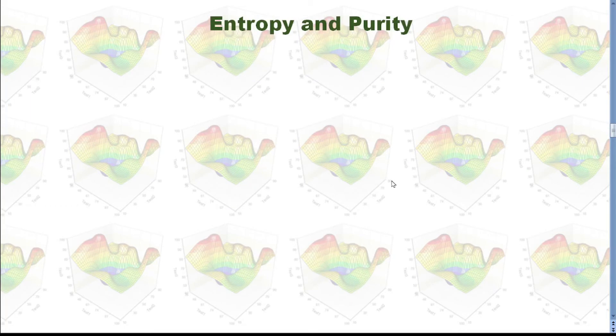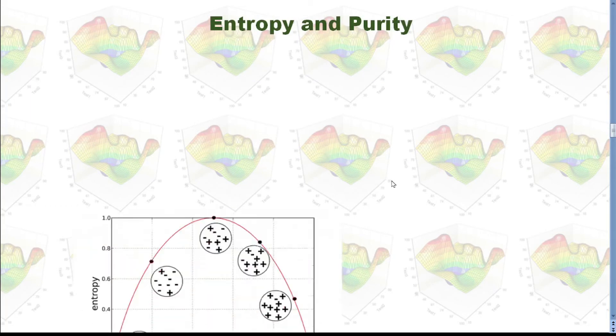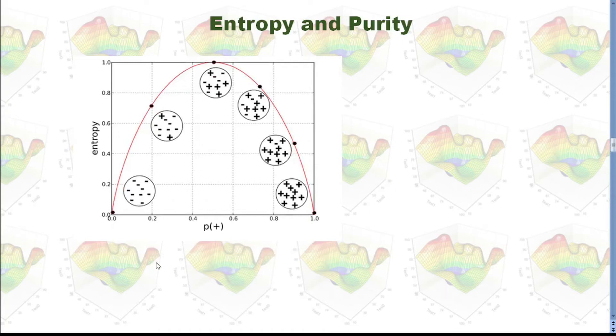How to understand what entropy is? Let's see this graph. If we have 100% negative, then the entropy will be 0. If we have 100% positive, the entropy will be 0 too. If we have half and half plus and negative, then the entropy will be 1.